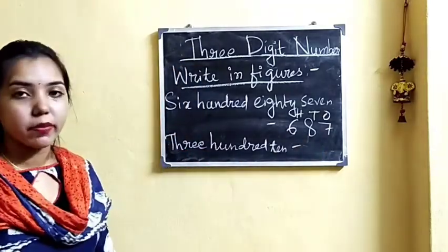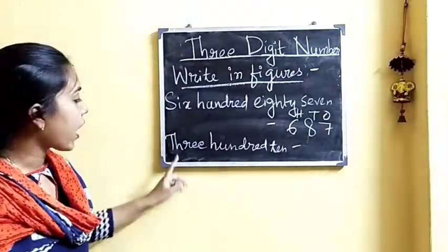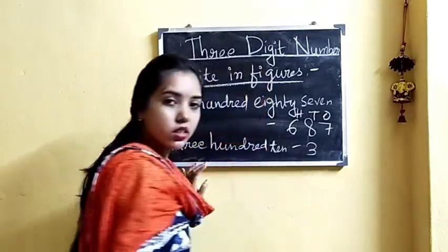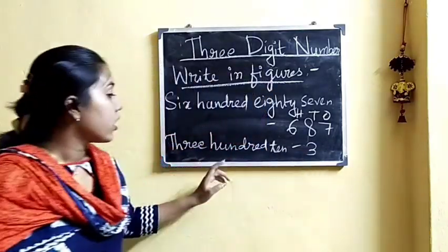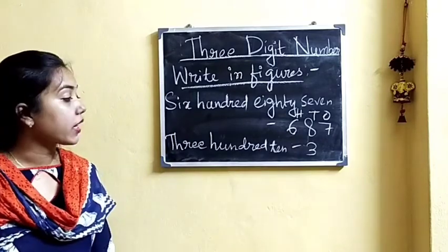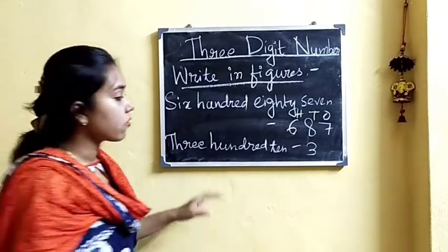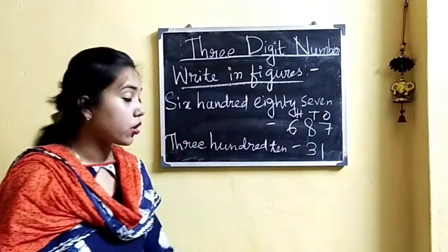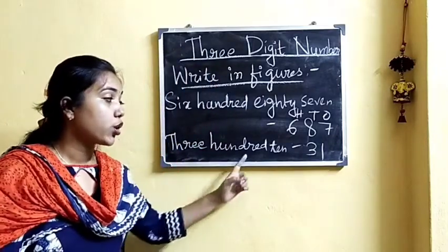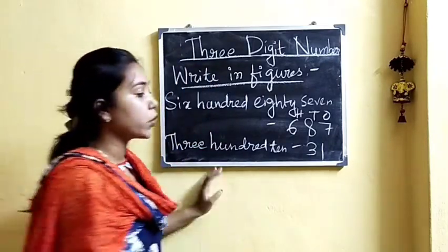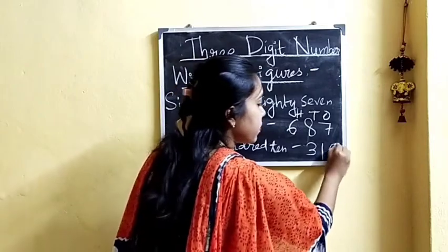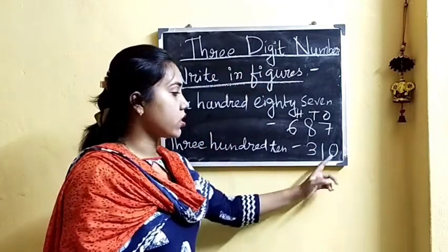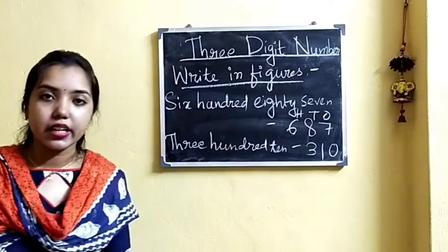Now look at the next number. Here we have 300, so we will write 3 in the 100s place. And 10 means 1 ten, so we will write 1 in the 10s place. But there is no 1s, so we will put a 0 in the 1s place. So the number becomes 310.